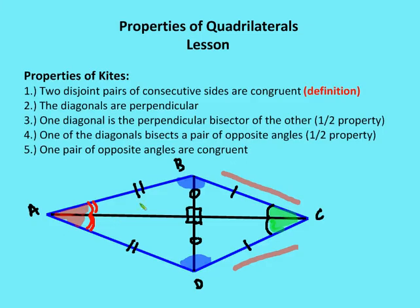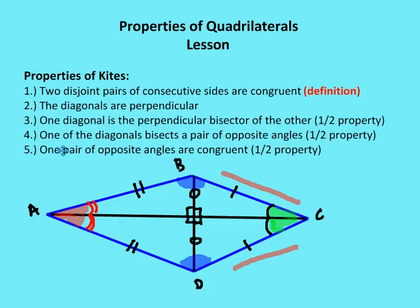BD is not the perpendicular bisector of AC, although it is perpendicular to AC. Another half property: one diagonal bisects a pair of opposite angles — the diagonal that is a perpendicular bisector bisects angles A (BAD) and BCD. This is a half property because BD does not bisect angles ABC or ADC. Finally, one pair of opposite angles are congruent: angle ABC is congruent to CDA — also a half property since only one pair of opposite angles are congruent.